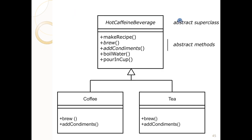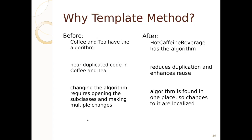We've got our abstract super class, hot caffeine beverage. We tell it to make a recipe. We've got brew. We've got add condiments, boil water, pour in cup. Both coffee and tea have brew and add condiments. Before, coffee and tea had the algorithm — we duplicated code in coffee and tea. After, coffee beverage had the algorithm, and instead of duplicating code in coffee and tea, we reduced duplication and enhanced reuse by relying on the hot caffeine beverage.